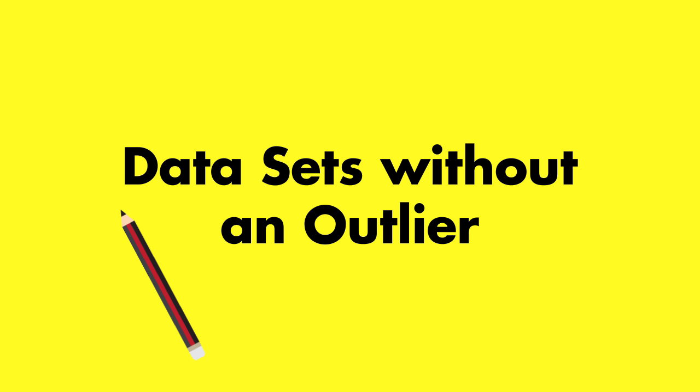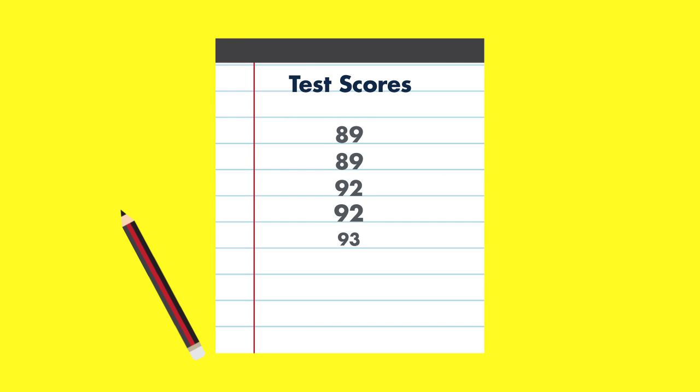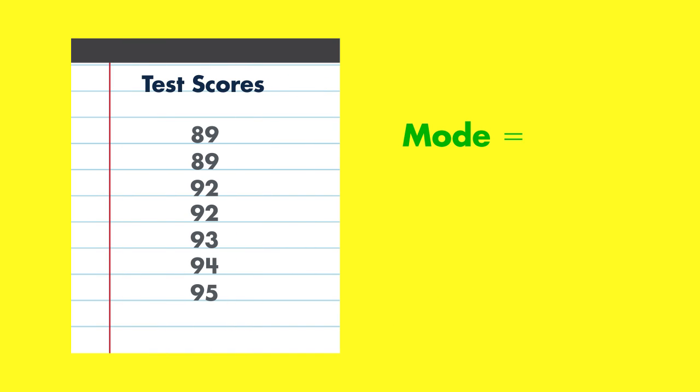Sometimes, datasets have a smaller range. In this set of test scores, the mode is made up of two numbers, 89 and 92.